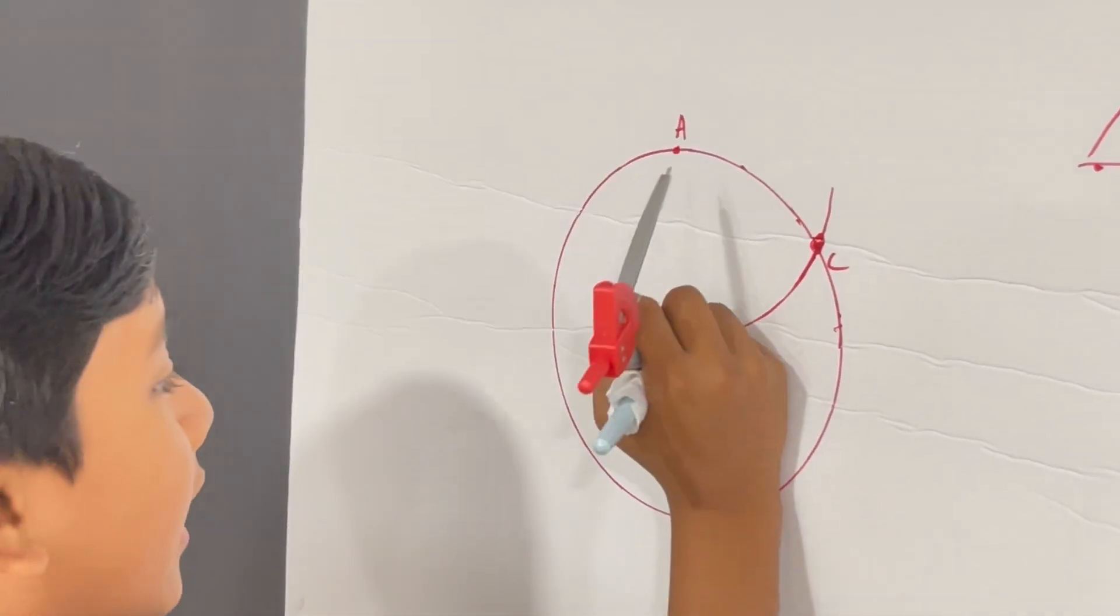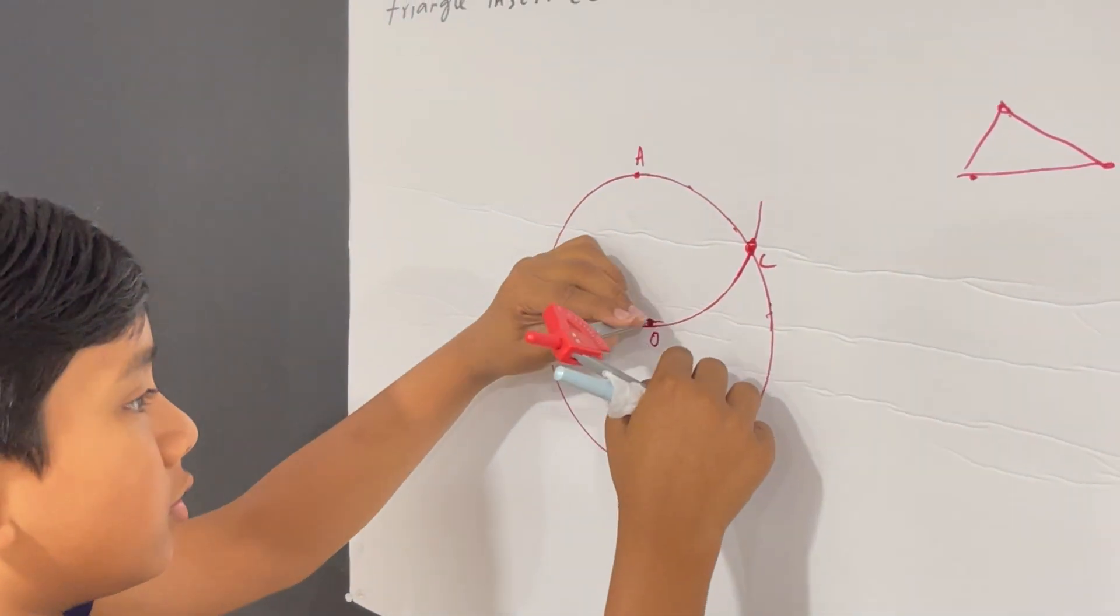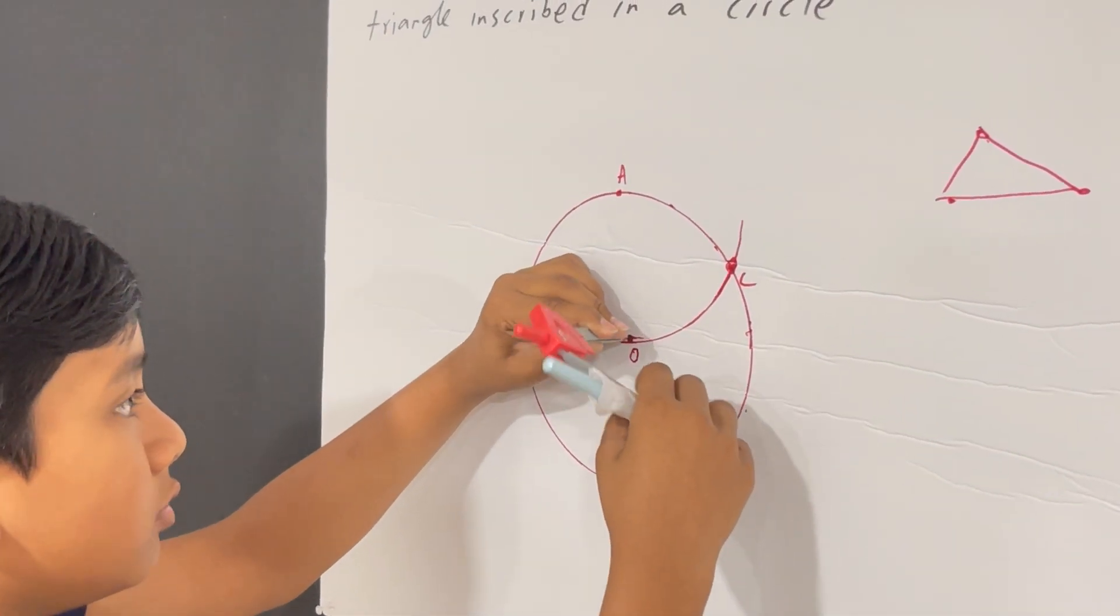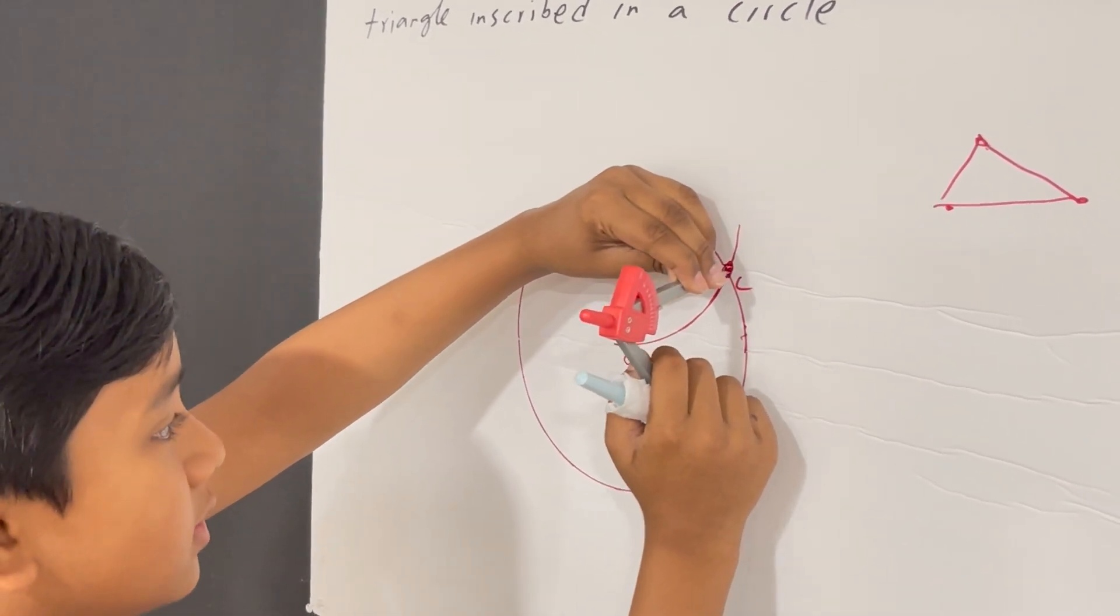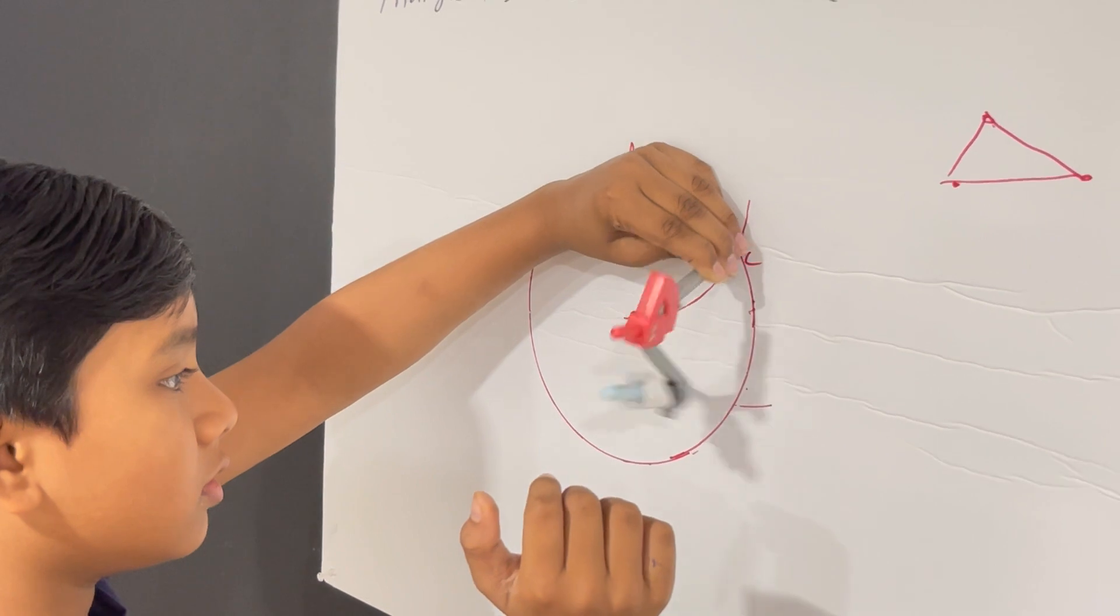And now I'm going to put another one over here. So we go from C. So that's the distance from R. Are you making a hexagon?